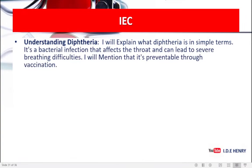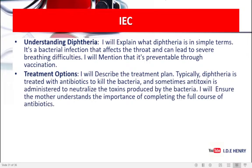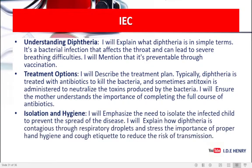Lastly, our IEC — Information, Education, and Communication. Understanding diphtheria: I will explain what diphtheria is in simple terms to the mother. It is a bacterial infection that affects the throat and can lead to severe breathing difficulties. I will mention that it is preventable through vaccination. Treatment options: I will describe the treatment plan — diphtheria is treated with antibiotics to kill the bacteria, and sometimes antitoxin is administered to neutralize the toxins. I will ensure the mother understands the importance of completing the full course of antibiotics. Isolation and hygiene: I will emphasize the need to isolate the infected child to prevent the spread of the disease and explain how diphtheria is contagious through respiratory droplets, stressing proper hand hygiene and cough etiquette.